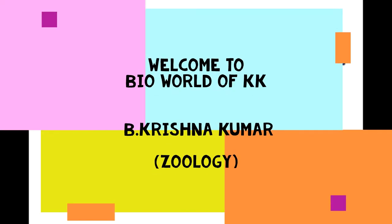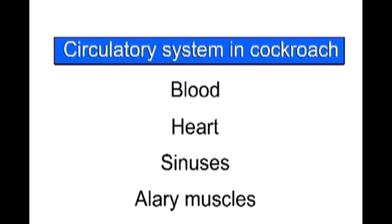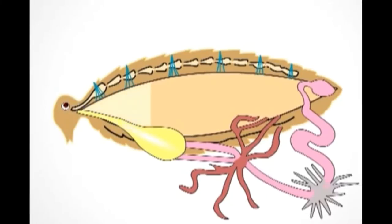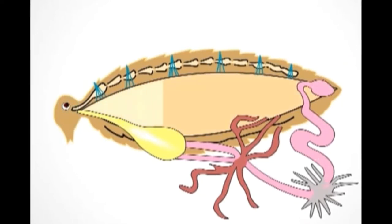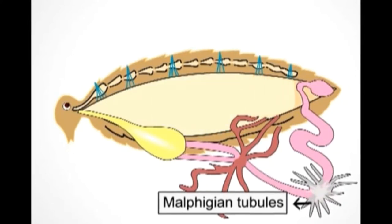The circulatory system in cockroach consists of blood, heart, sinuses, and alary muscles. Blood is white in color due to the absence of respiratory pigment hemoglobin, so it does not help in the transport of respiratory gases. But it transports all the nutrients to all the organs of the body and collects waste material from organs and supplies it to the excretory organs called Malpighian tubules.